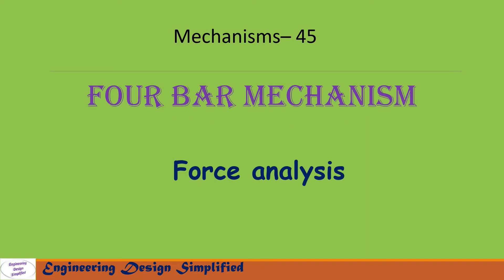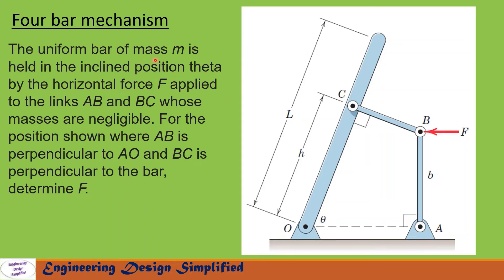In this video I am going to solve a four bar mechanism static force problem. The uniform bar of mass m is held in the inclined position theta by the horizontal force F applied to the links AB and BC whose masses are negligible. For the position shown where AB is perpendicular to AO and BC is perpendicular to the bar, determine F.